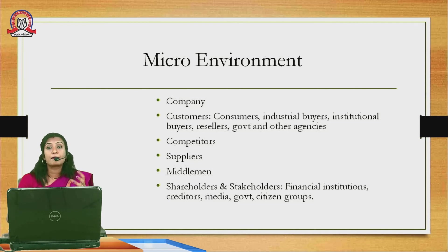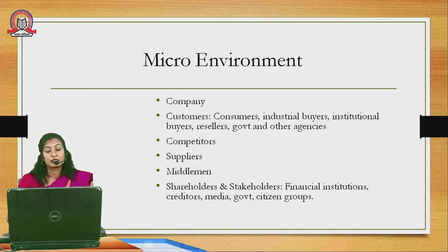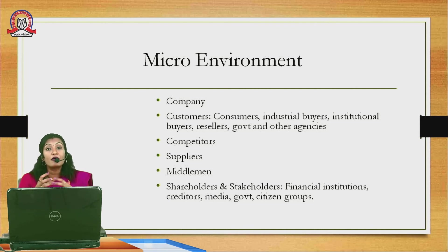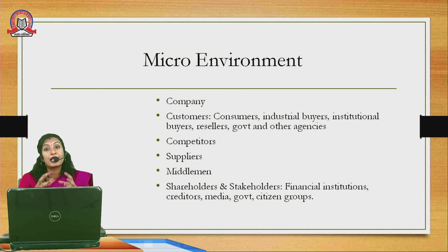The fourth aspect of the micro environment is suppliers. Suppliers provide raw materials to the manufacturer and are also called vendors. Then there are middlemen, who help in distribution. In the four P's, the fourth P is Place — to make your product reach every customer, you need middlemen like dealers, wholesalers, retailers, and distributors who make the product available to consumers at different locations.